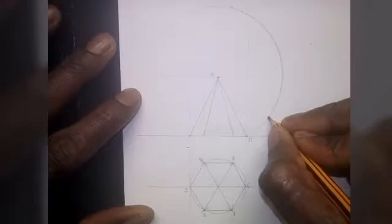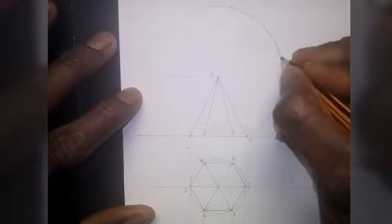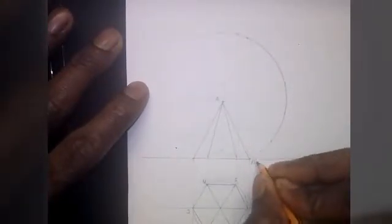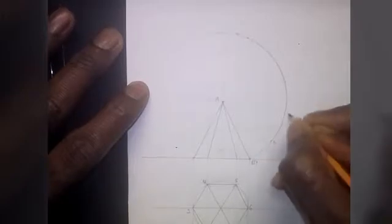So after that, these are the points I got. I'll number them here: one, two, three, four, five, six, six and one again.